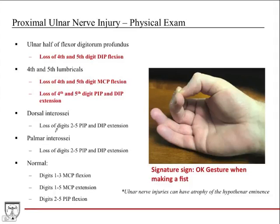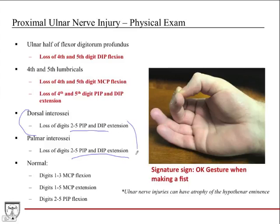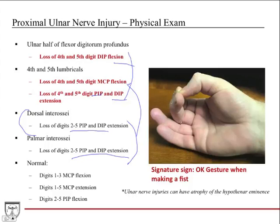The dorsal and palmar interossei both contribute to extension at the PIP and DIP joints for digits two through five — they don't act on the thumb. To drive this point home again: the main extenders of the PIP and DIP joints are the lumbricals with help from the dorsal and palmar interossei. The extensor compartment of the forearm does not contribute much to extension of these joints. That's why in this presentation you see loss of extension at the PIP and DIP joints.